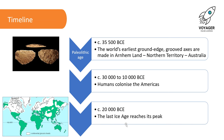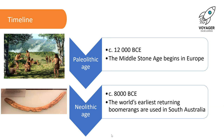Around 20,000 BCE, the last Ice Age reached its peak and the Earth started to warm up from there. Around 12,000 BCE, the Middle Stone Age began in Europe, so the Paleolithic Age became what's called the Neolithic Age. And around 8,000 BCE, the world's earliest returning boomerangs were used in South Australia. This unit is about the Old Stone Age, and the next unit will be about the New Stone Age or the Neolithic Age.